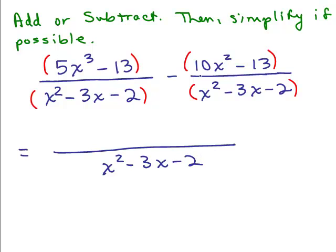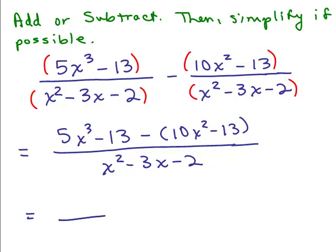And subtract the numerators. So we take the first numerator which is 5x cubed minus 13, you could keep the parentheses around it but it's not really necessary, and I'm subtracting the second numerator. Now some of you may skip this step where you put minus in parentheses 10x squared minus 13 and you might just do the distributive property on this line by writing minus 10x squared plus 13, which is what I'm going to do on the next step.